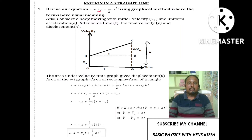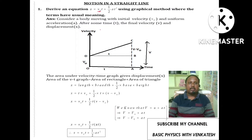All the kinematic equations are valid for uniform acceleration. If a body is moving with constant acceleration, then only we can use the kinematic equations. Consider a body moving with initial velocity v-naught, which is not equal to zero, moving with uniform acceleration. After some time t, it has a final velocity v and covers the displacement x.